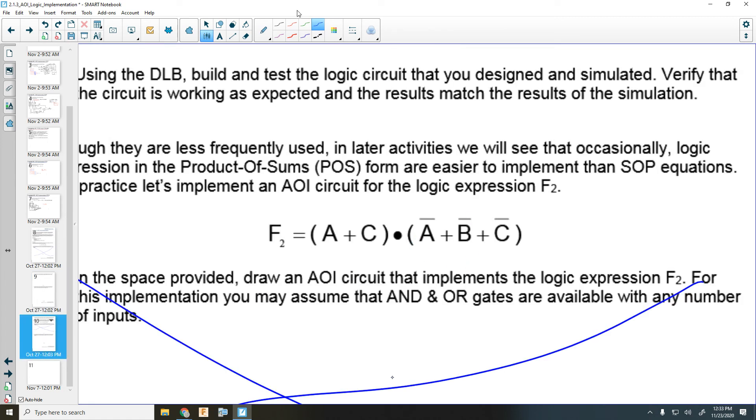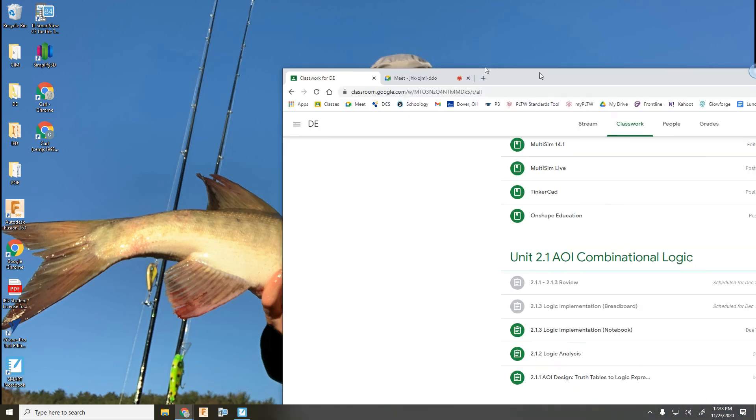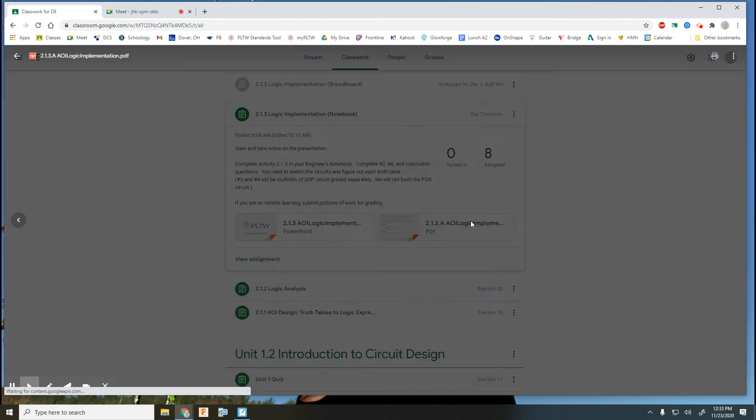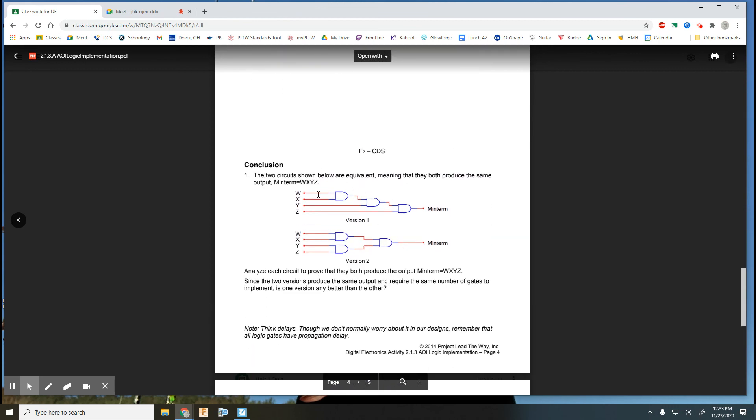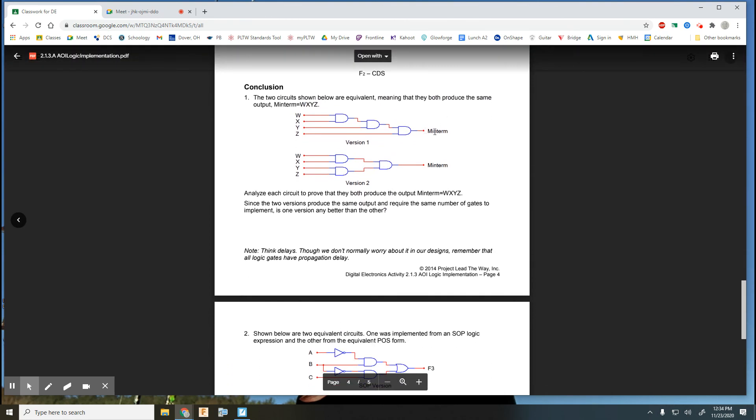So then we'll redraw that with just two-input gates. And also you need to figure out the truth table for both of those. And then I think there's probably some conclusion questions to answer. Do we have conclusions or not? Can you still see that screen? Logic implementation. Oh yeah. Then we have conclusions. Looking at those couple of circuits, which one is better? Even though they both produce the same result, one design's better than another.